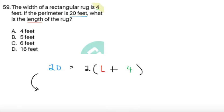Item 59: The width of a rectangular rug is 4 feet. If the perimeter is 20 feet, what is the length of the rug? So this is a very simple question actually. We have the formula for the perimeter given to be twice the value of length plus the width. So we have direct substitution. Since we're given with the perimeter, which is 20, we're given with the width of the rectangle, which is 4.